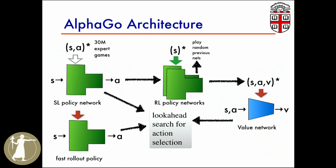Now you have a network for predicting next moves and a network for deciding whether a Go board is good or not. You can use those for search — not so differently from how chess programs work: imagine many steps forward in the game played by the best network, with value predicted by the best value network, running many imagined games to see how they turn out. Ultimately, after lots of those games, it says: I think this stone in this position is a good place to move. Then the human plays, and the computer goes through the whole process again. It's a lot of computation, but it plays state-of-the-art Go.